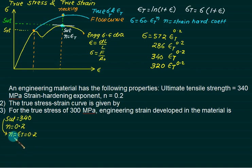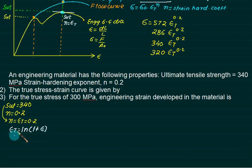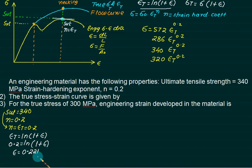For SUT, n equals epsilon-t equals 0.2. Epsilon-t is ln(1 + ε). Substituting 0.2 = ln(1 + ε), we can find the engineering strain epsilon value, which comes out to approximately 0.221.